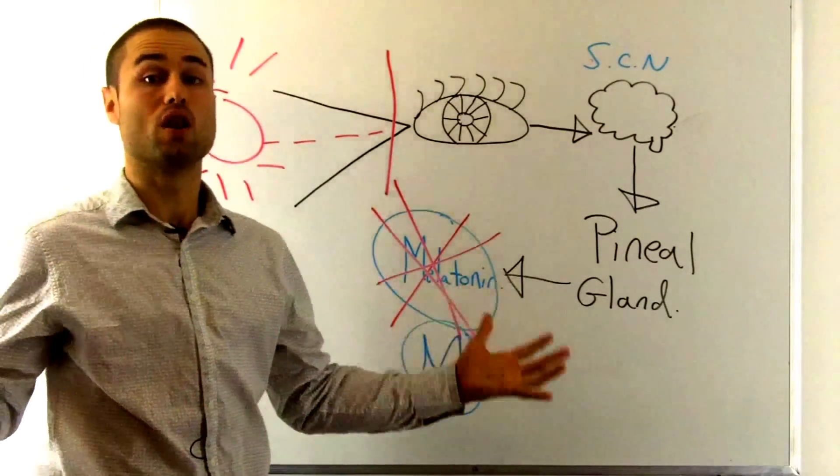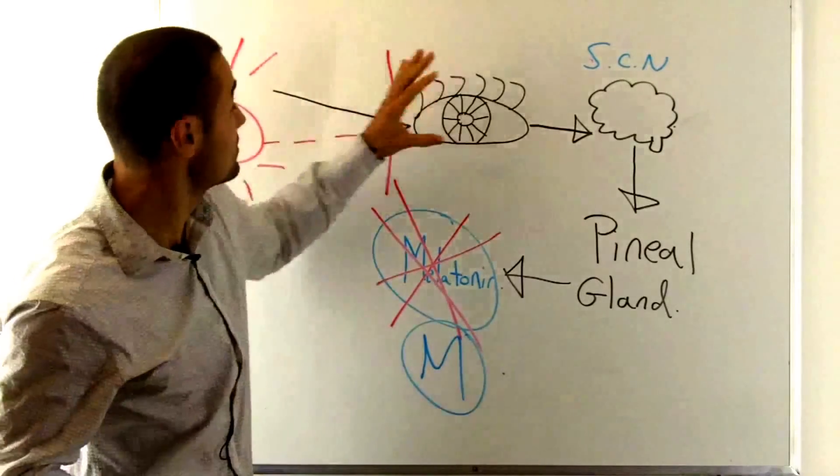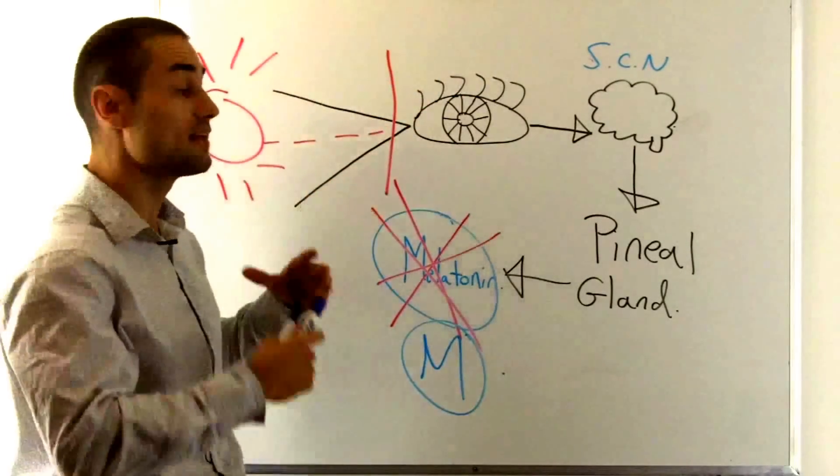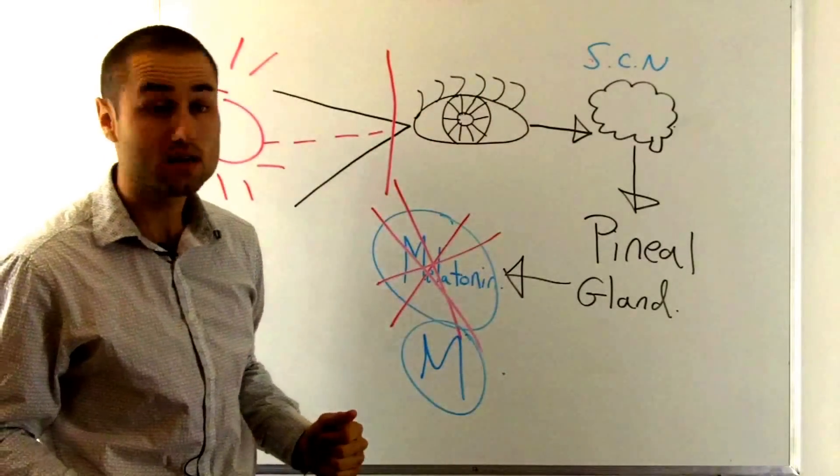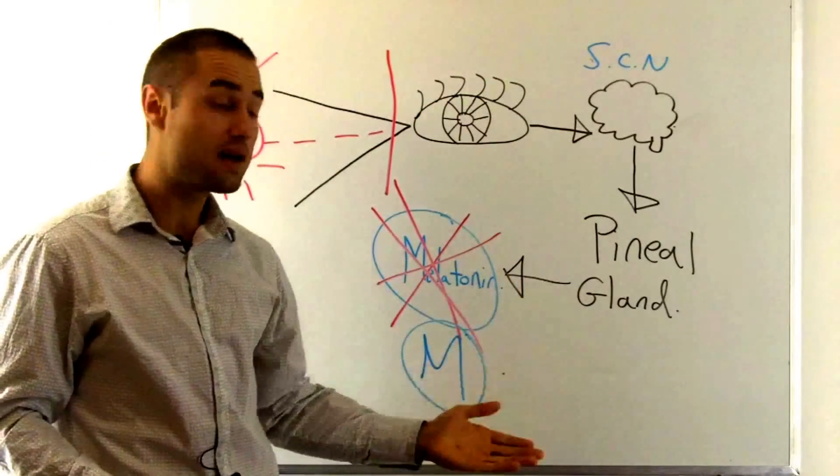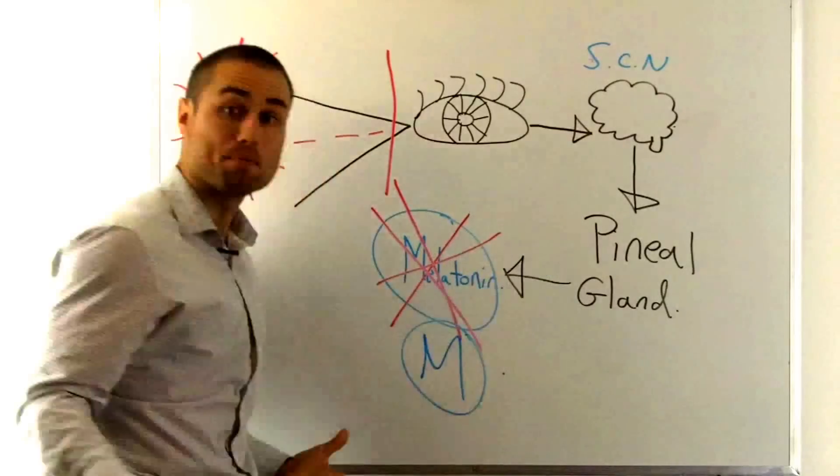Bathed in artificial light, and always this light is sending signals to the eye saying it's daytime, sending signals to the suprachiasmatic nucleus, sending signals to the pineal gland, and then sending signals not to make melatonin.